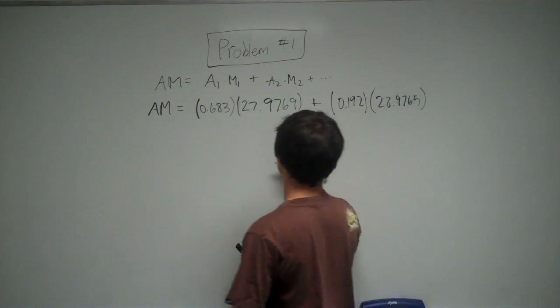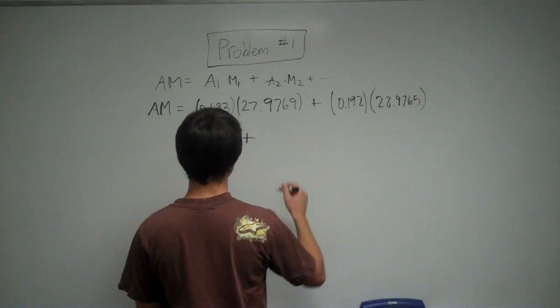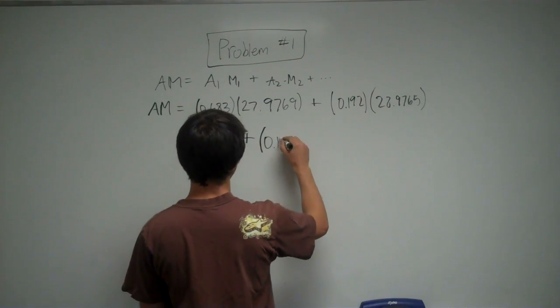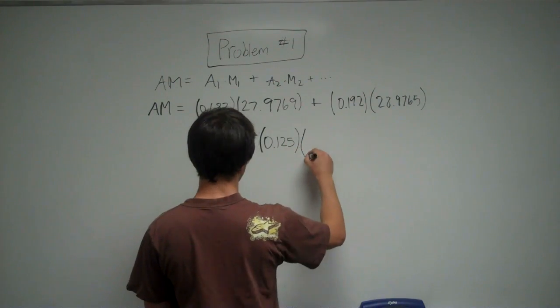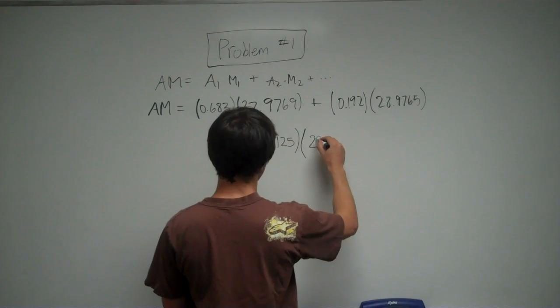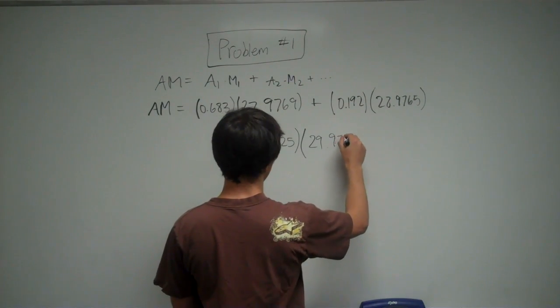And then plus the last one, so its abundance is 0.125 and the mass is 29.9737.